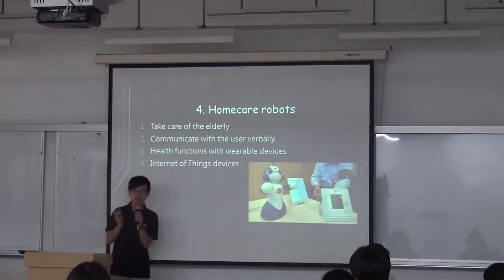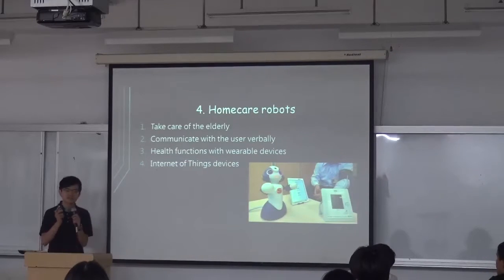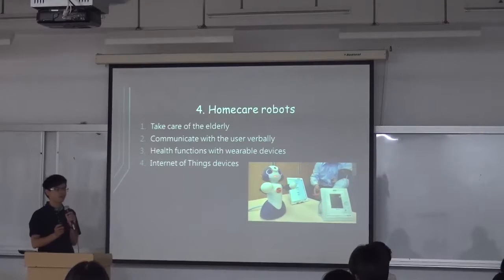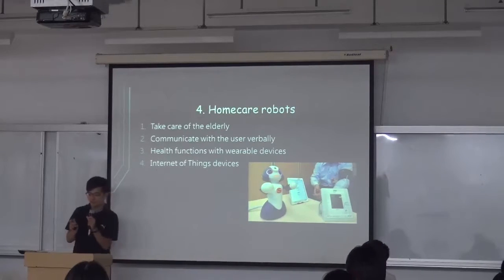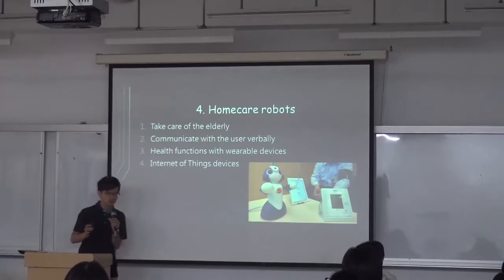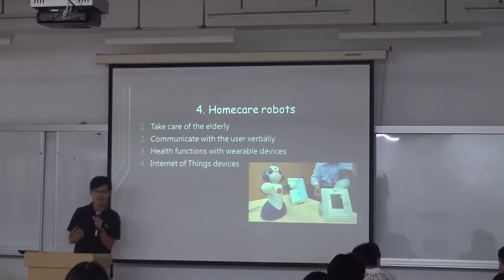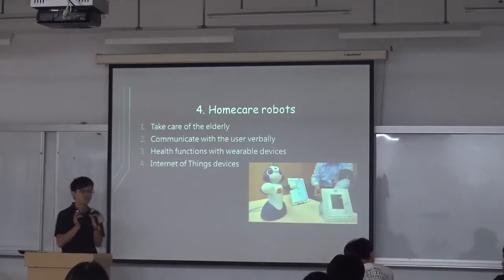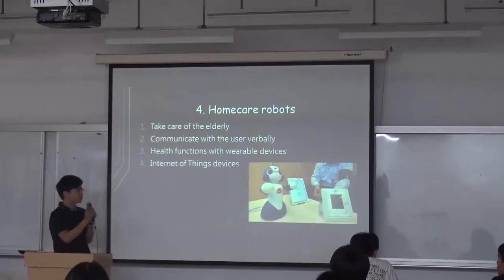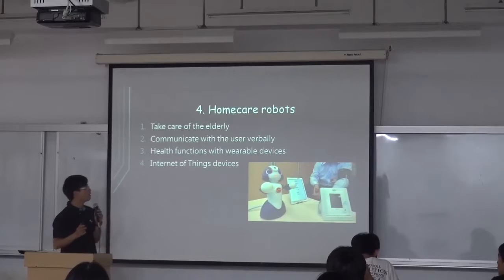I would like to tell you about home care robots. Japan has had this kind of mindset of home care robots many years ago, and they started from speculation to reality. What can this kind of robot do? First, it can take care of older people. Because as you get old, you may have some health problems, so this kind of robot can monitor your health.